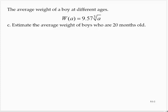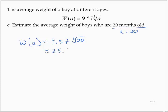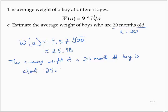Estimate the average weight of boys who are 20 months old. So A equals 20, meaning W of A equals 9.57 times the cube root of 20. Bringing up the calculator, type 9.57, math, fourth option, 20, close it off, hit enter — the result is 25.97, about 25.98. So the average weight of a 20-month-old boy is about 25.98 pounds.